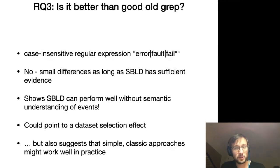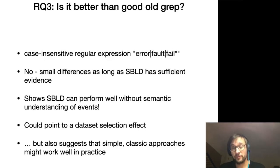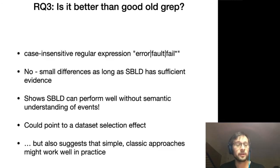Is it better than good old grep? The grep expression we tried is basically the case-insensitive regular expression for 'error', 'fault', and 'failure', and we didn't really find any big difference so long as SBLD had sufficient evidence. On the plus side, this shows that SBLD can perform very well without understanding anything about the semantics of the events. The fact that grep works so well could point to a dataset selection effect where Cisco has given us failures they already have a good understanding of, or it could simply suggest that in many cases the simple and classic approaches still work well.